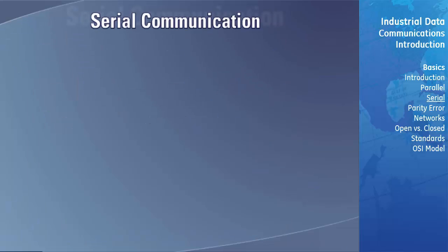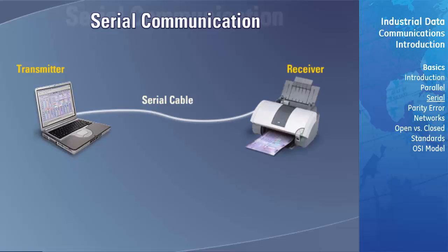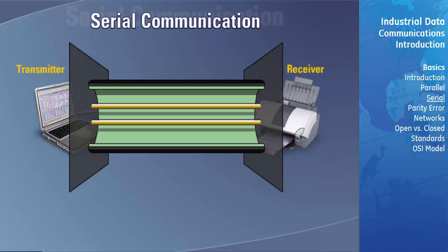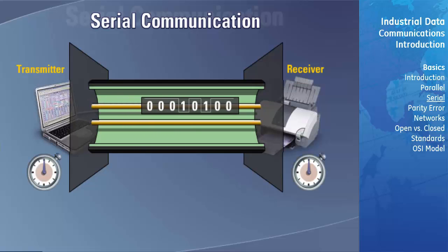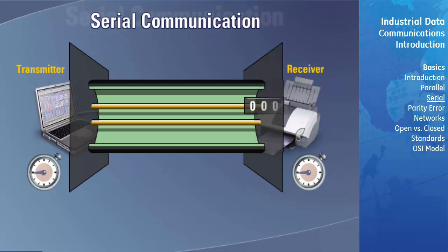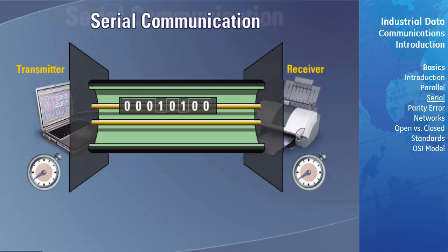Now let's take a look at serial data communication links. With a serial link, only two wires are required between the transmitter and receiver. The eight electrical on-off voltage signals are sent in a sequence on the two wires with reference to a time base. With serial communications, the data transfer is done bit by bit. To ensure that the receiver knows what to do with the data bits, the data is usually arranged in a particular format.